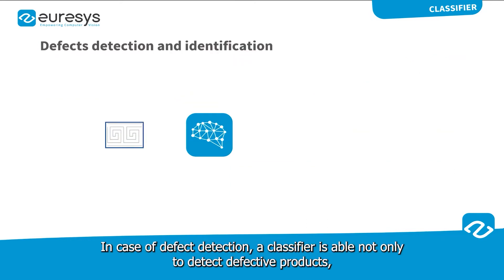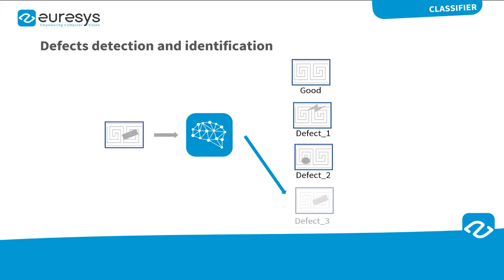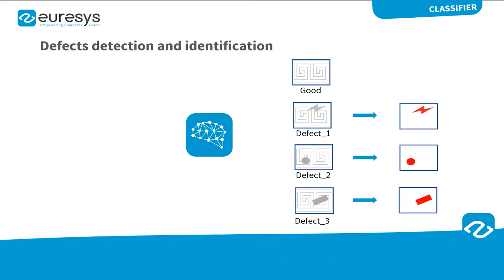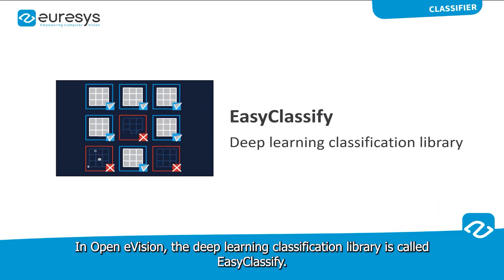In case of defect detection, a classifier is able not only to detect defective products, but also to identify the type of defect. However, what it cannot do is to accurately locate the defect itself. This is the main limitation of classifiers. In OpenEVision, the deep learning classification library is called EasyClassify.